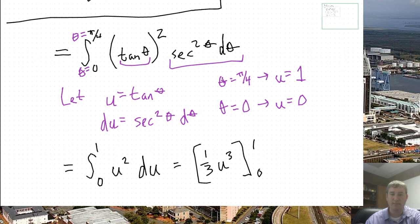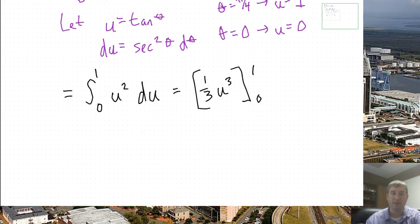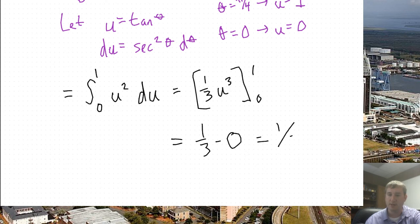Plug in the top. We get 1/3 times 1 cubed is just 1/3. Minus plug in the bottom. 1/3 times 0 is 0. And that's simply 1/3. And that's my final answer for that problem.